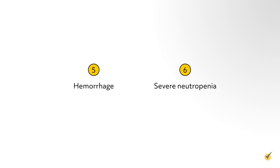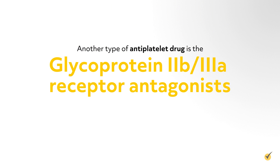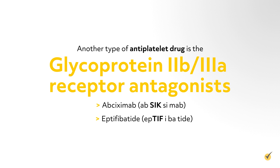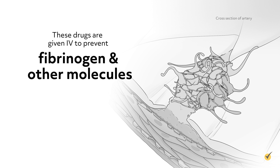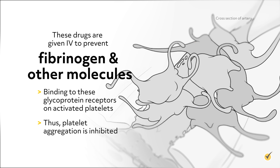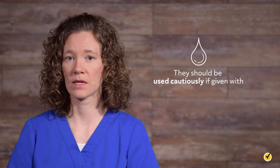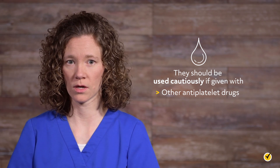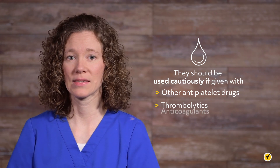Hemorrhage and severe neutropenia have also been reported. Another type of antiplatelet drug is the glycoprotein 2b3a receptor antagonists, which include abciximab, eptifibatide, and tirofiban. These drugs are given IV to prevent fibrinogen and other molecules from binding to these glycoprotein receptors on activated platelets, thus inhibiting platelet aggregation. Bleeding is the most common adverse effect, so they should be used cautiously if given with other antiplatelet drugs, thrombolytics, or anticoagulants.